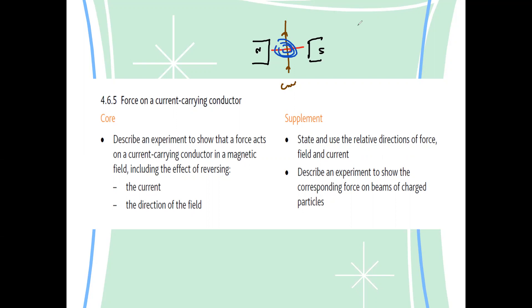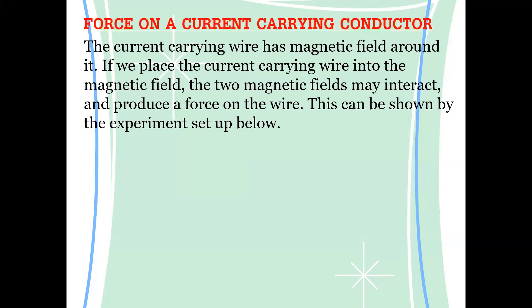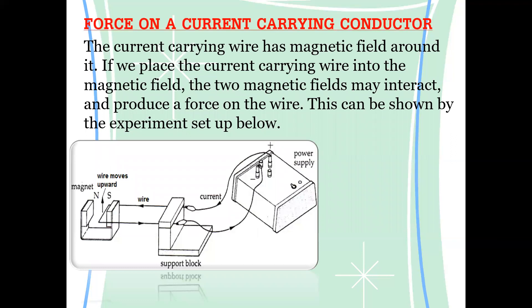The question is: why does the wire experience a force in a magnetic field? Your answer should always mention that the wire carrying a current produces a magnetic field, and this magnetic field interacts with the magnetic field of the permanent magnet — that's why it experiences a force. So the current-carrying conductor produces a magnetic field, that magnetic field interacts with the magnetic field of the permanent magnet, and the wire experiences a force.